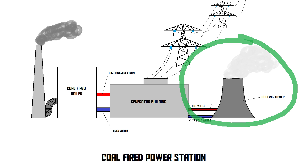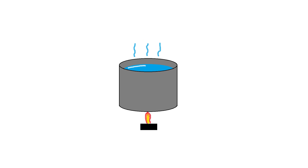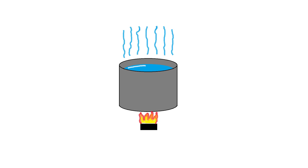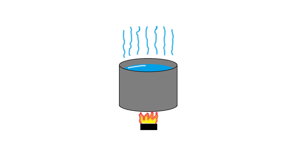Let's look at how the cooling tower actually manages to cool down this water. It's all based on a very simple principle: evaporation. The evaporation of water is a process that needs energy. If you're boiling some water, the more the temperature rises, the more water vapour you get. The higher the temperature becomes, the more it evaporates — in other words, the more energy you put into it, the more water vapour you get.